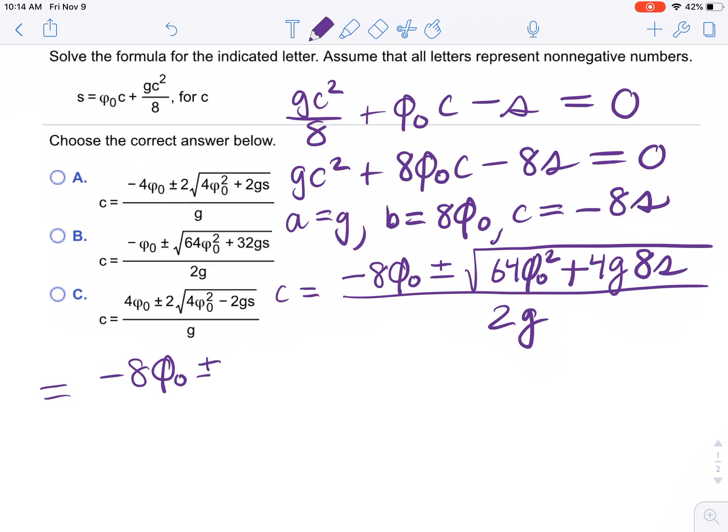What's the greatest common factor? 32, because 8 times 4 is 32. So we're gonna get the square root of 32 times 2v sub 0 squared plus gs, divided by 2g.